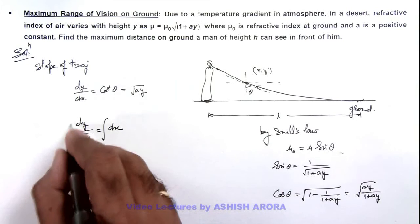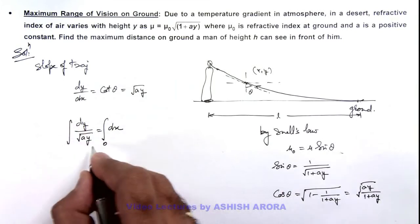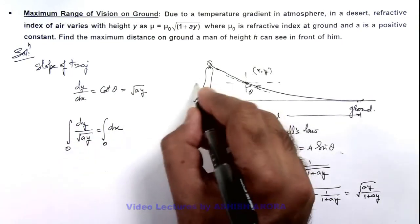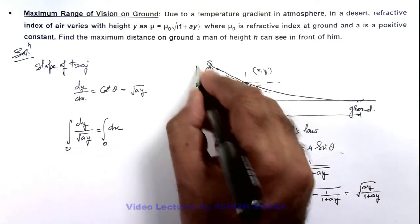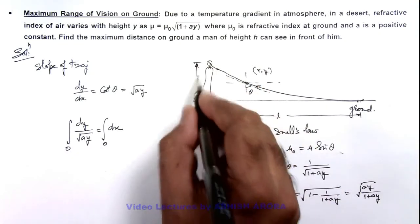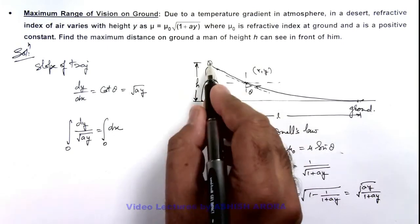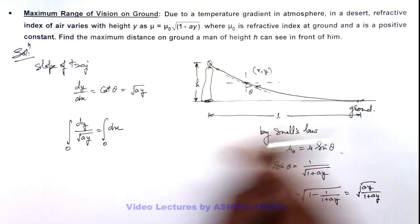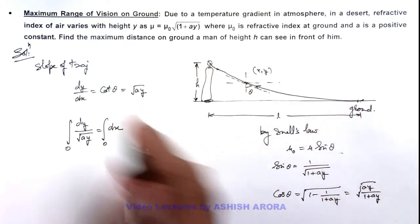And if we integrate it, at x = 0, y was equal to 0. And as we are given that height of man is h, and we consider h is the height of his eye above the ground, so at y = h, x should be equal to l.